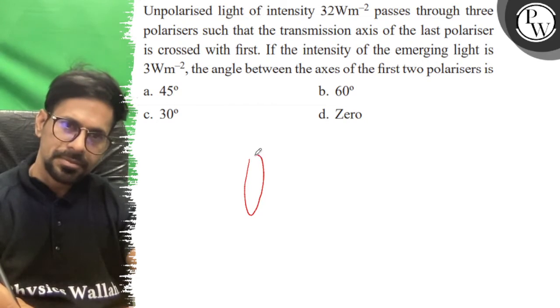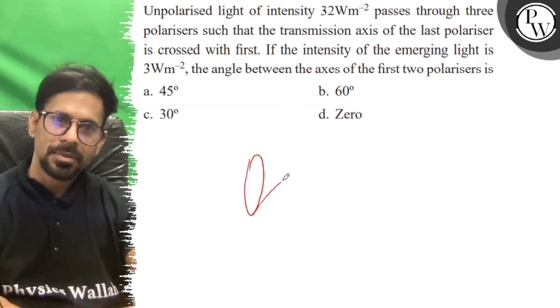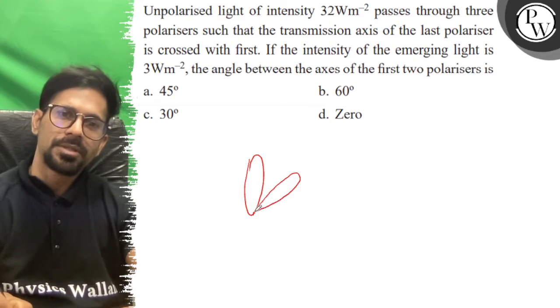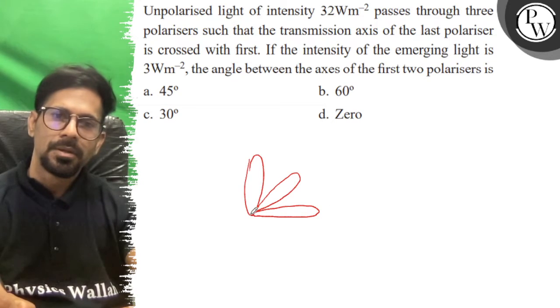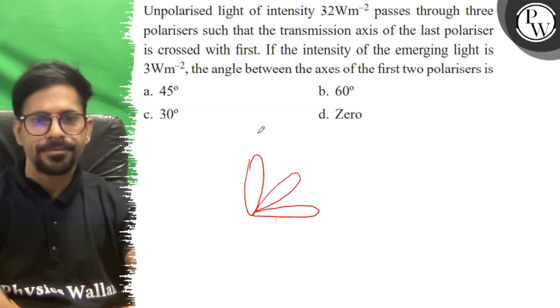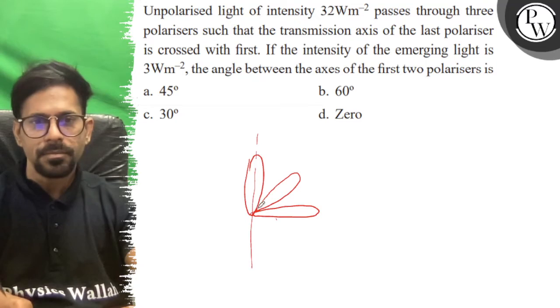Imagine that this is the first polarizer. Now we are going to take a vertical angle. This is the second polarizer and this is the third polarizer. Now the third is crossed with the first. This angle is theta, so this is 90 minus theta.